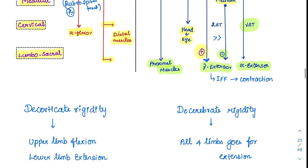Let's summarize. In decorticate rigidity, the upper limb goes for flexion because the rubrospinal tract from the red nucleus is intact, while the lower limb goes for extension. In decerebrate rigidity, the rubrospinal tract is also cut, so all four limbs go for extension.